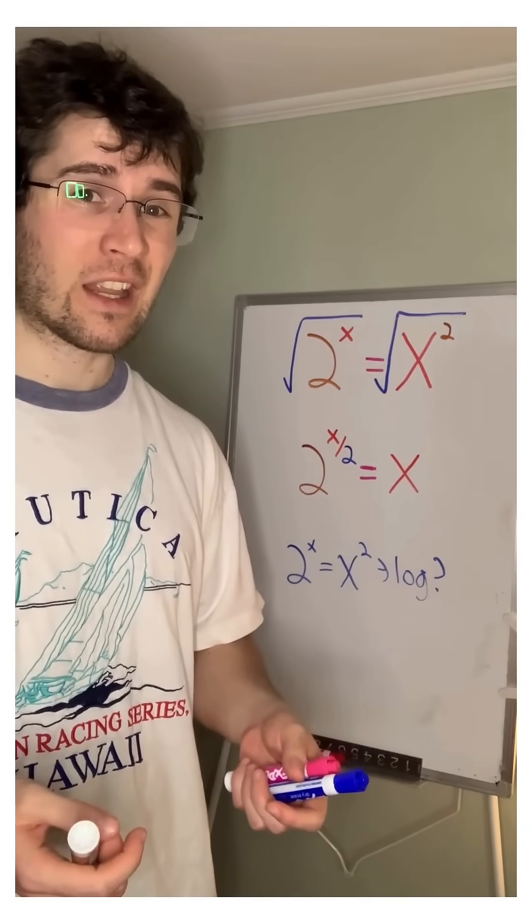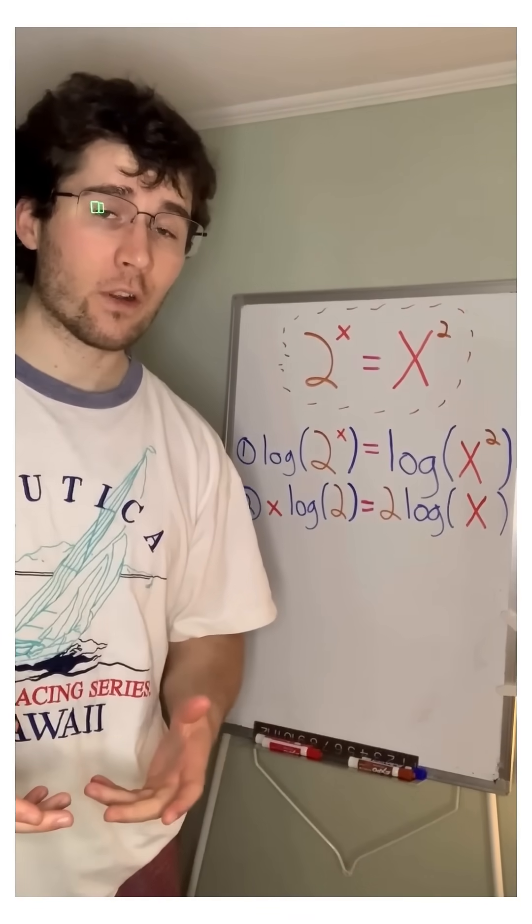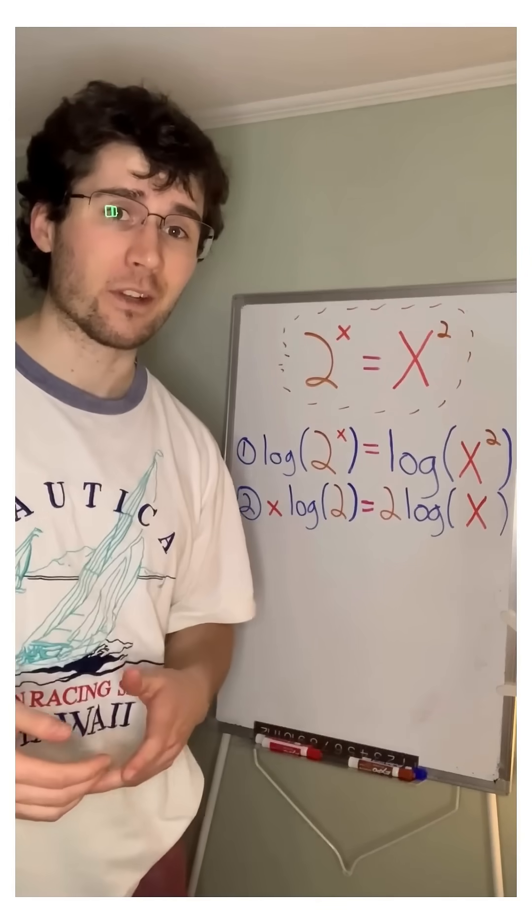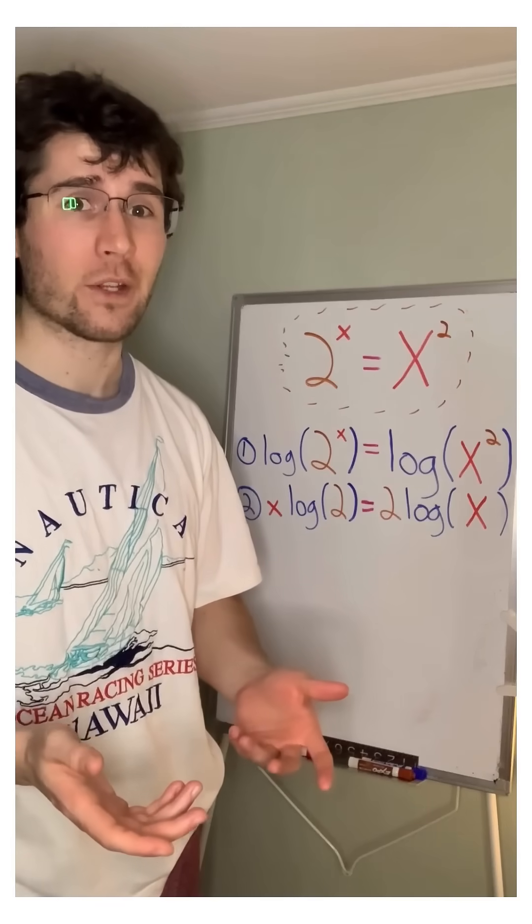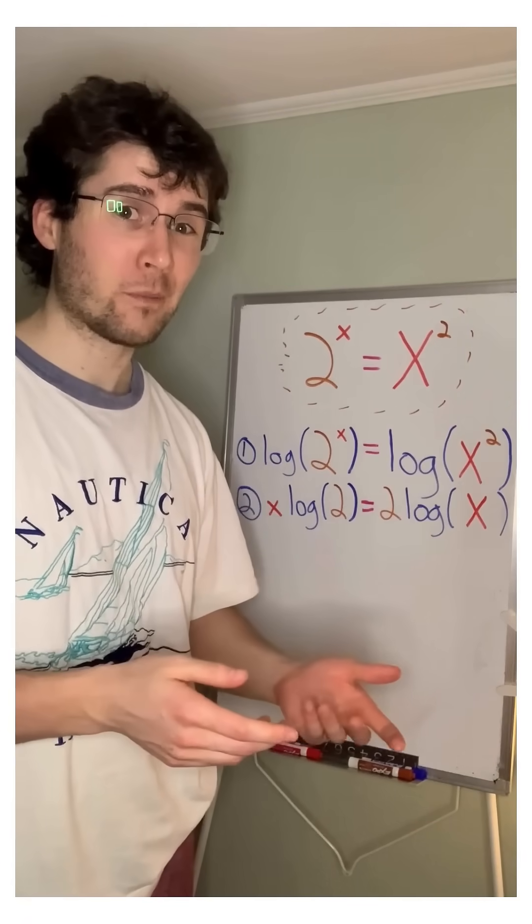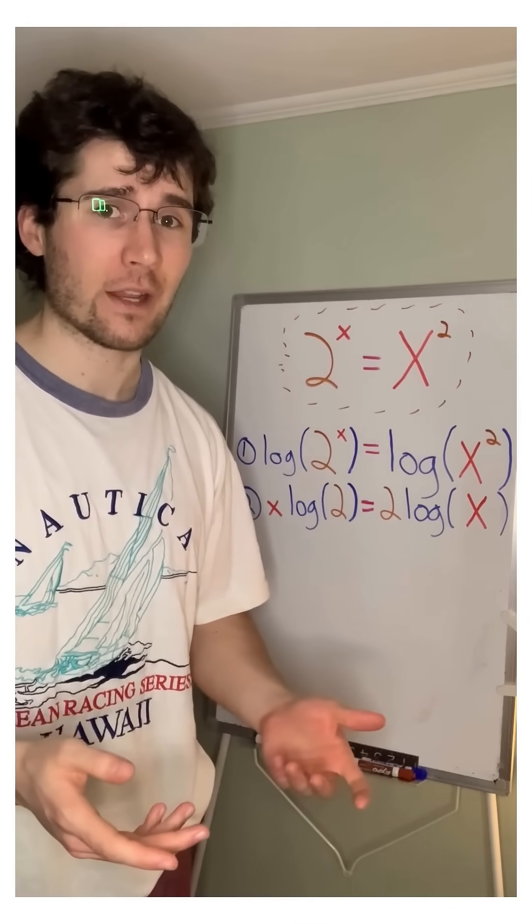So instead, let's try taking the logarithm of our original equation. We'll take the log of both sides, then use log rules to bring our exponents in front. But now we have x times some number on one side, and on the other we have some number times the log of x. So how do we get x out of our log and untangle the other x?